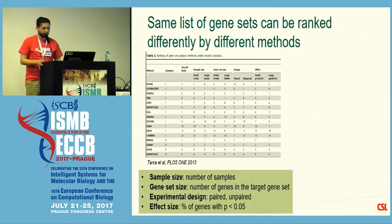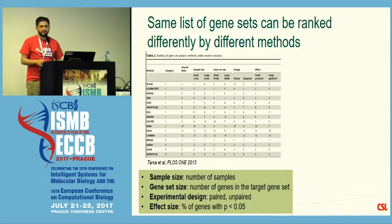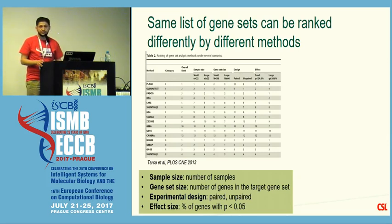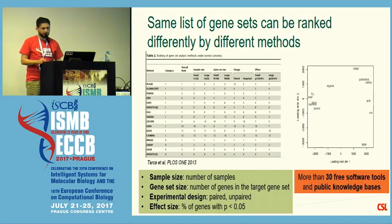There has been a lot of work in the literature. A recent benchmarking study published in PLOS ONE by Taka evaluated these methods, comparing many of them and concluding that performance depends on different factors. The most prominent are: the number of samples in your experiment, the size of gene sets, the experimental design — whether paired or unpaired — and the percentage of genes that are differentially expressed.